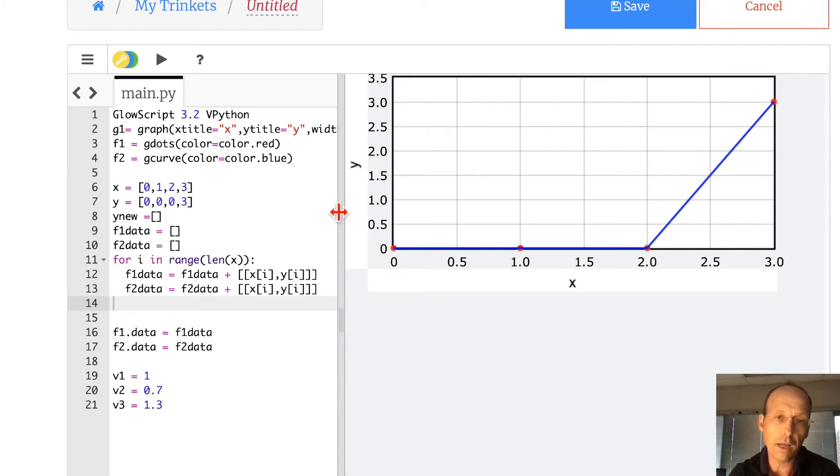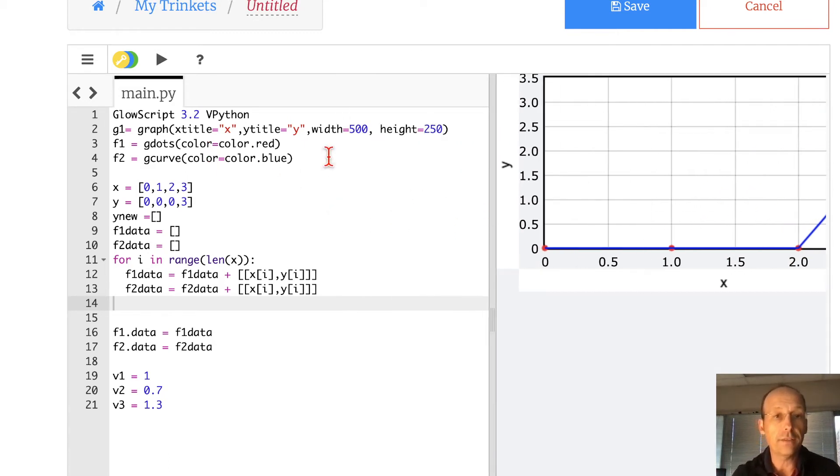And so what I have so far is this stuff is for the graph. These are my X and Y values, right? So X is zero, one, two, three. It's a list. If you have questions about lists, let me know. I have some details. I've made a video about lists. And then these are my Y values to start with. Now, what I'm going to do is I'm going to make a new Y value and compare the time for the old Y value. So I need another list. It's empty right now. I'll fill it in later. F1 data, F2 data.